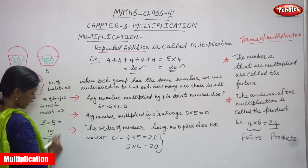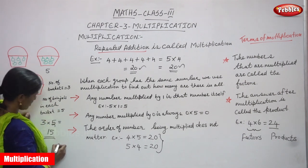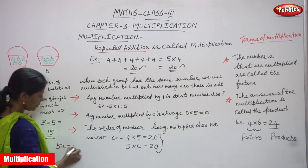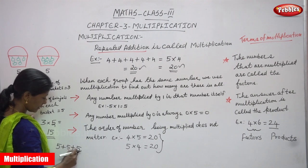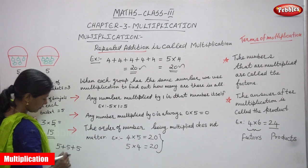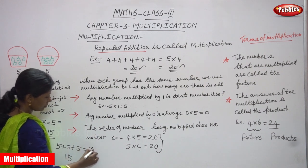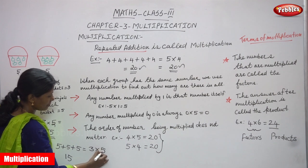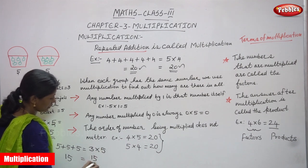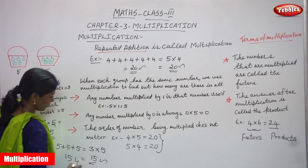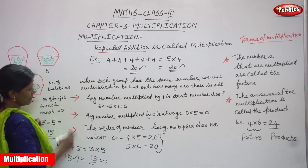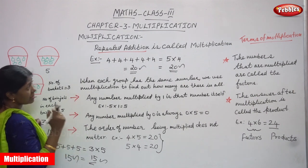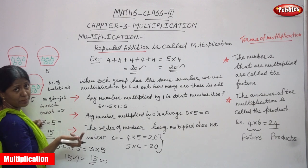Otherwise, you can write the repeated addition: 5 plus 5 plus 5. You can get 5 plus 5 is 10, 10 plus 5 is 15. So 3 baskets and 5 brinjals in each basket gives you 15. Both answers are correct.